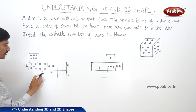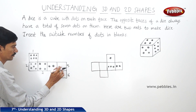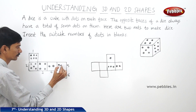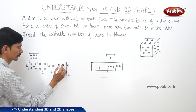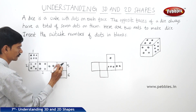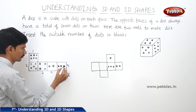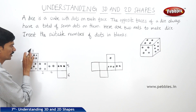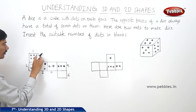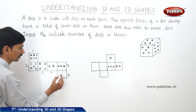Now face three has four dots on it, so its opposite face five will have three dots. Next, face one and face six are the opposite faces. So as face one has six dots on it, then face six has only one dot.